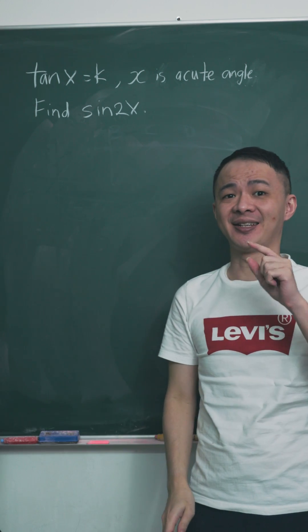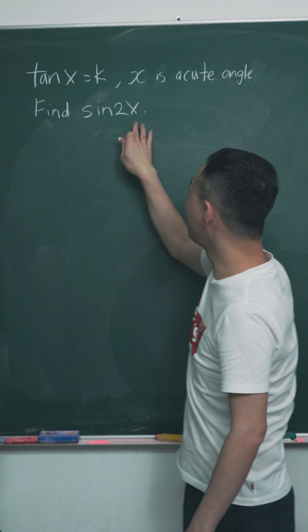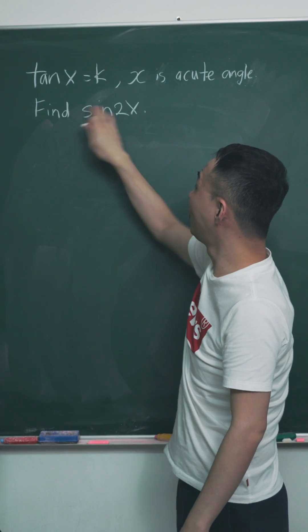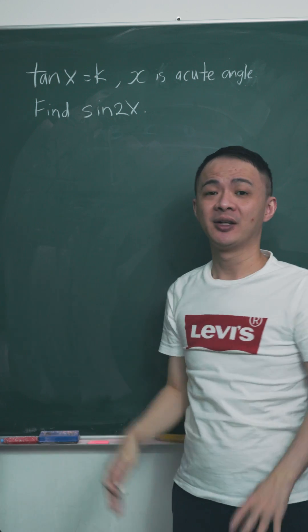First, you must get the idea that x and 2x are different size angles. So you cannot simply say, oh, I just multiply by 2 here. You cannot do that.